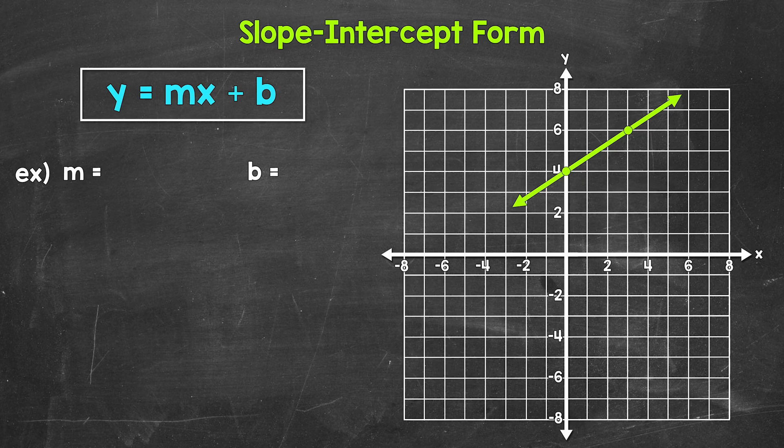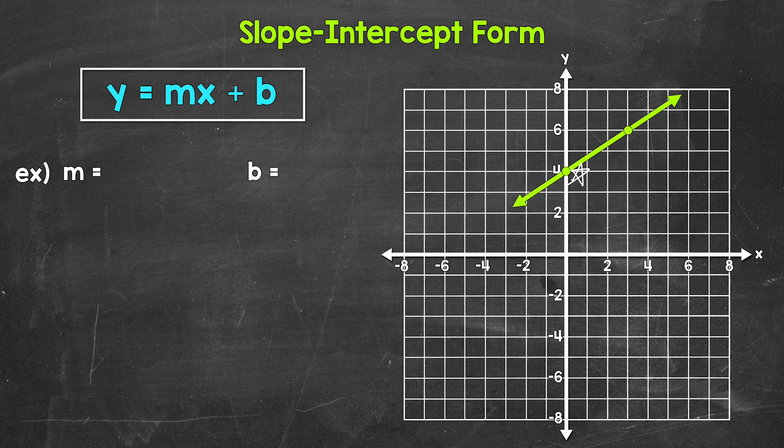So for the y-intercept, where does this line cross the y-axis? Well, it looks like this line crosses the y-axis right here at 4. So the coordinates are 0, 4. So our y-intercept is 4.